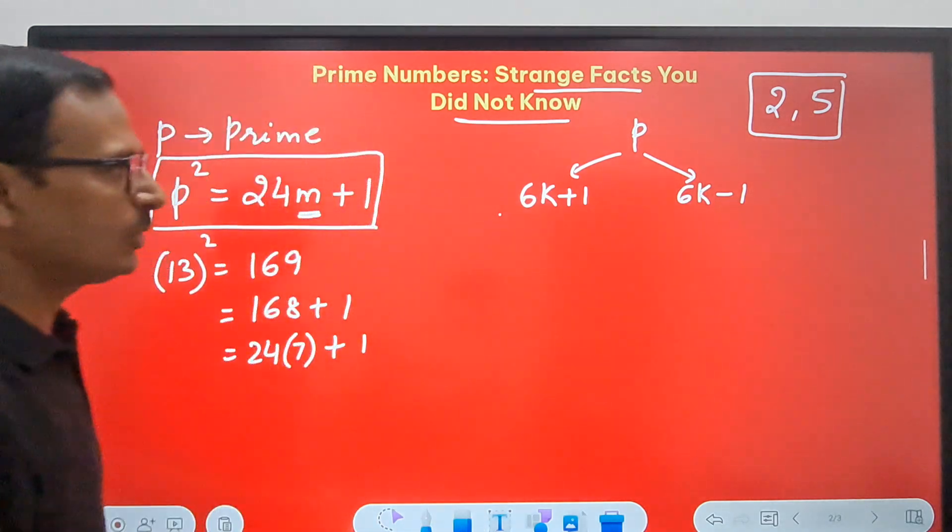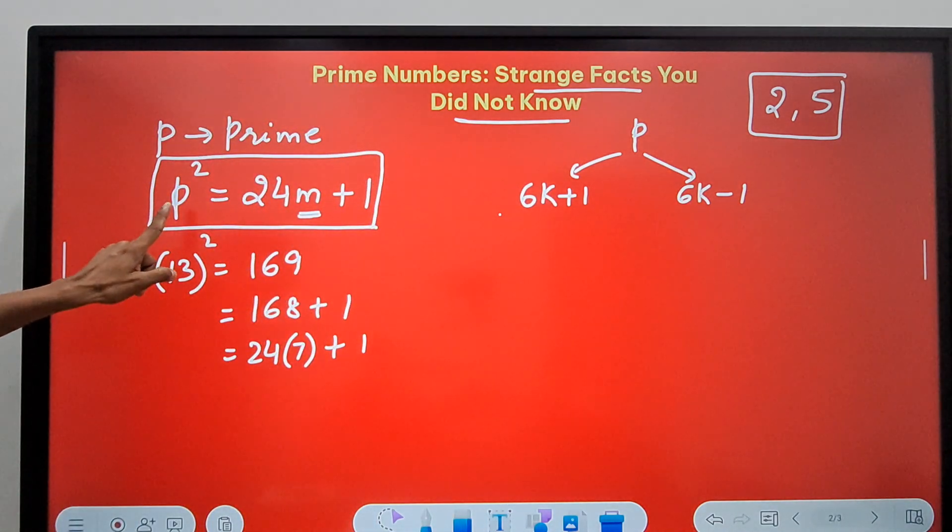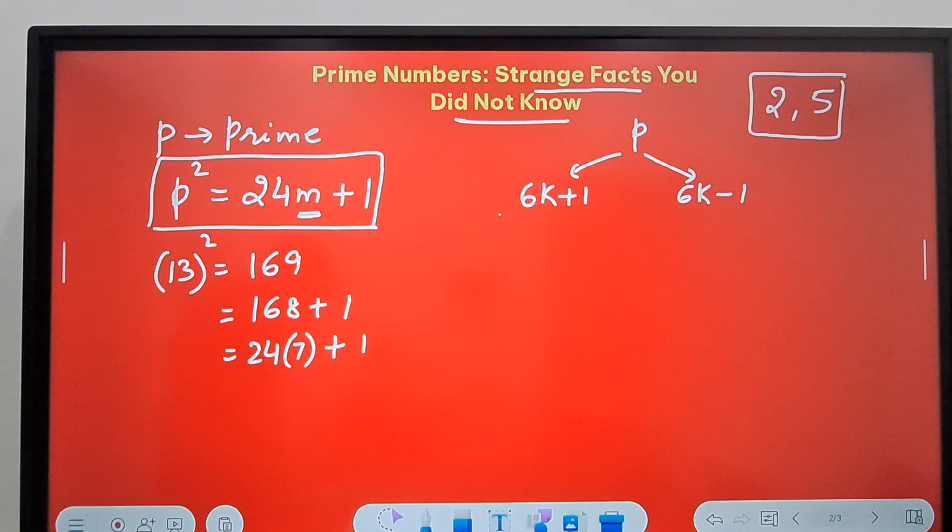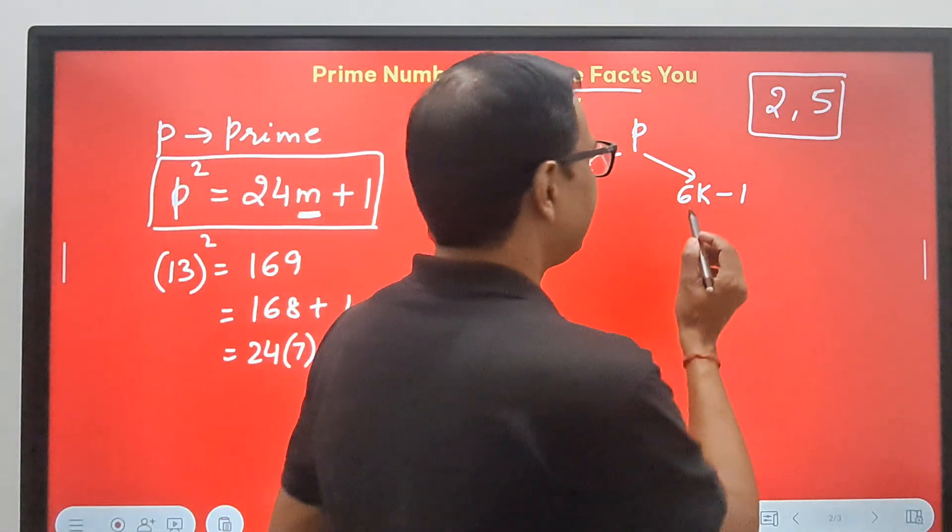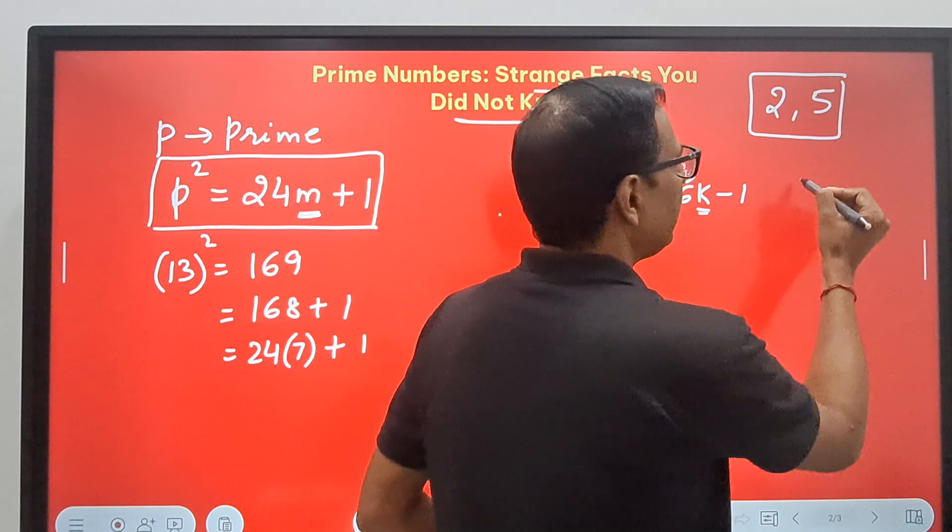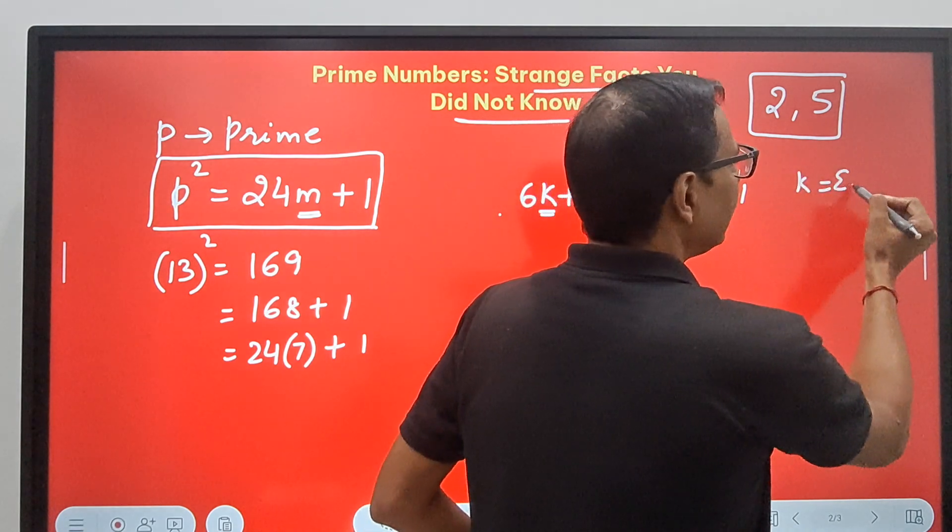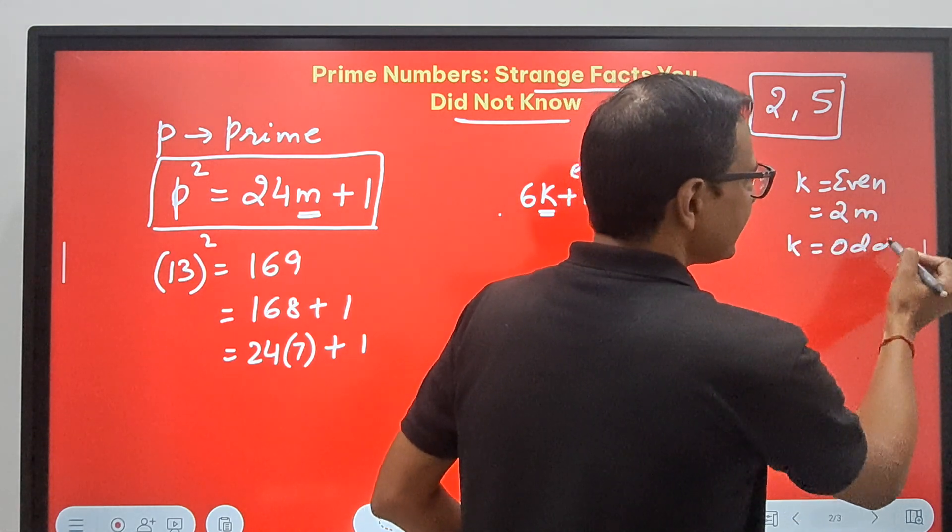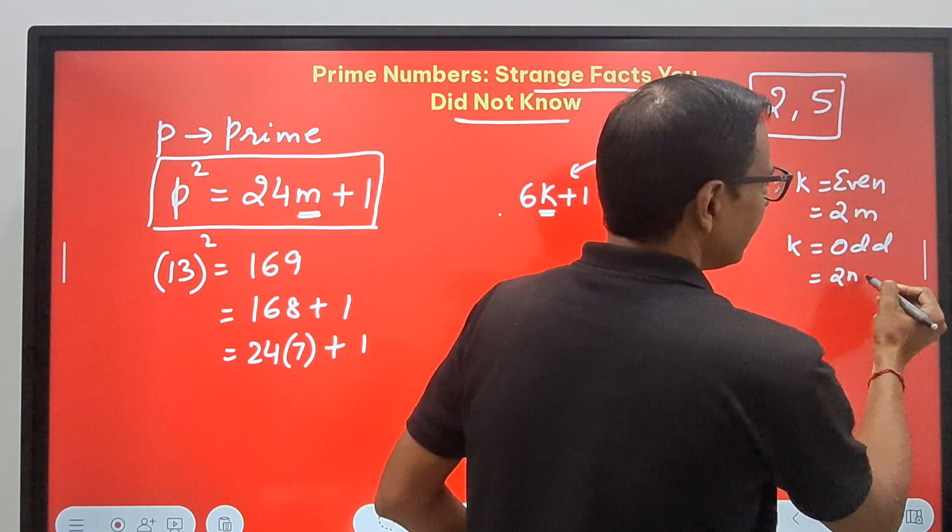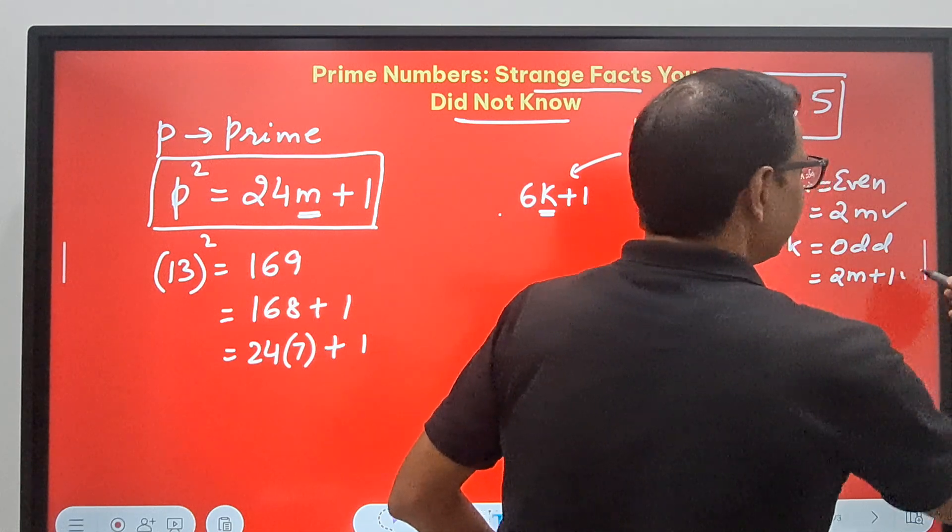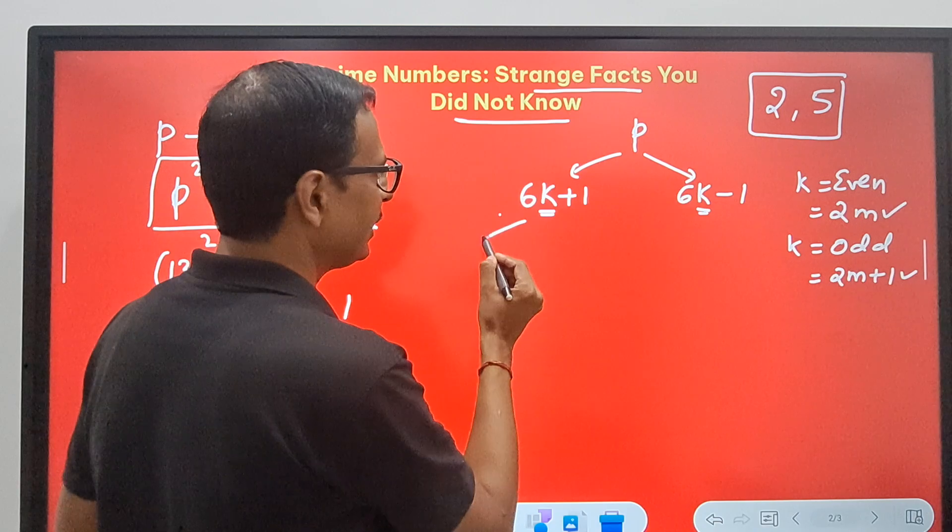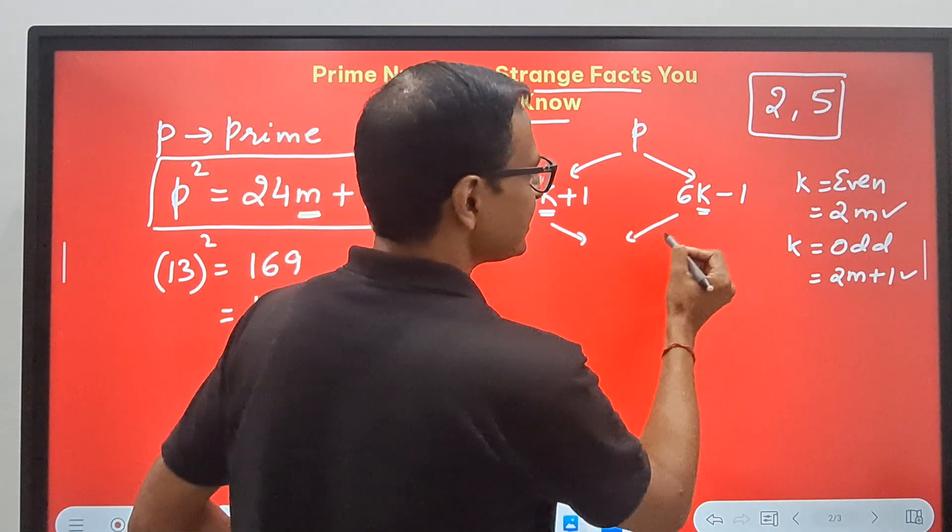Now we're talking about the square of the prime number. So we have to square these 6k plus 1 and 6k minus 1. And before squaring it, let me tell you that the number k here can be either even, which is represented by 2m, or k can be odd, which is represented by 2m plus 1.